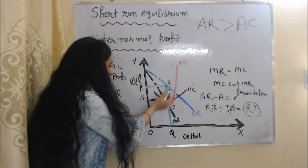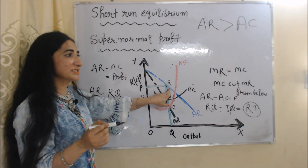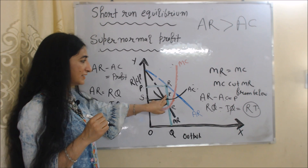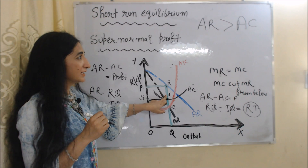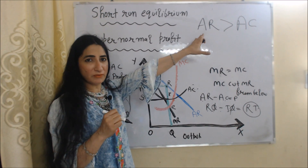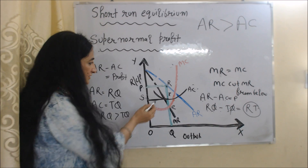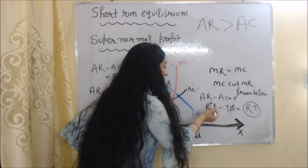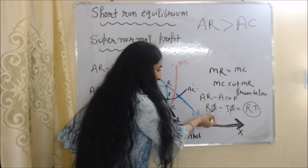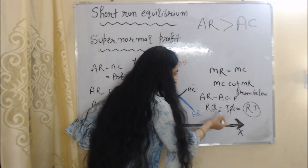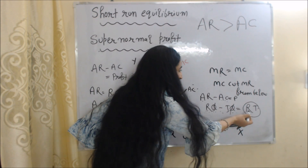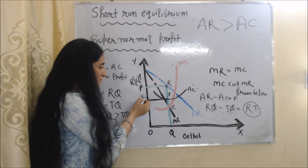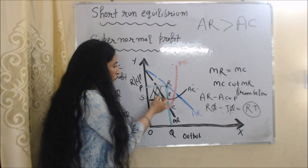Here RQ is our average revenue, because point R touches the revenue curve. TQ is our average cost, because point T touches the cost curve. In the case of supernormal profit, average revenue is more than average cost — RQ is more than TQ. We calculate profit by subtracting average cost from average revenue: RQ minus TQ equals RT. This RT is our per-unit profit. RT equals PS, so the rectangle PSRT represents our supernormal profit.